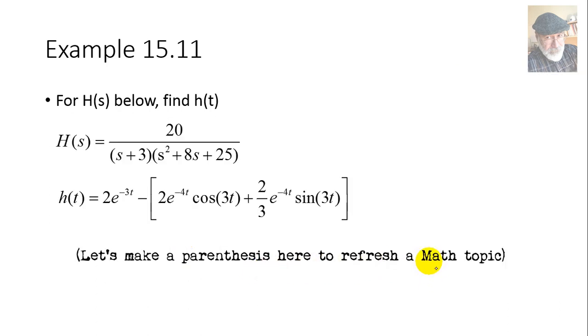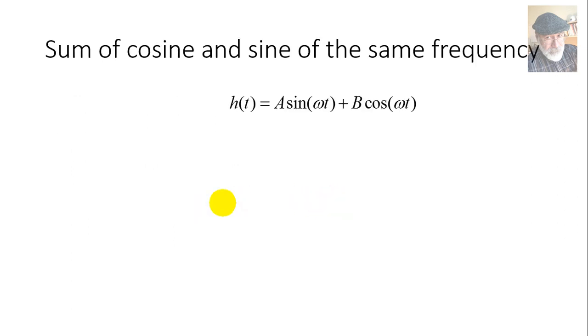Let's make a parenthesis here to refresh a little math topic on how to simplify an expression of a sine and a cosine added together when they both have the same frequency. Let's say h(t) is the sum of a sinusoid with an amplitude A and a cosinusoid of the very same frequency with a different amplitude B. I am advancing that we could represent that as another sinusoid of the same frequency with a different amplitude C and some phase shift D. How do we compute C and D out of A and B? You and I remember this identity from our high school years.